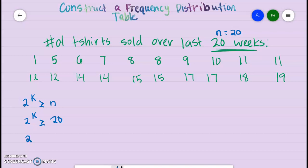So 2 to the fourth power would be 16, which is not going to be big enough. So let's go up. 2 to the fifth power would be 32, and 32 is greater than or equal to 20. If we would have used 4, 2 to the fourth would be 16, and 16 is not greater than or equal to 20. It would be less than 20.